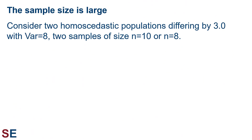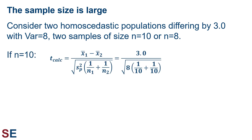Now let's look at the effect of sample size. Consider two populations with means that differ by 3, each with a variance of 8, but we take a sample of either 10 or 8. Since the sample sizes are changing, we'll be using two different t-critical values. With sample sizes of 10, plugging everything in gives a difference of 3 in the numerator, pooled variance of 8, and sample sizes of 10. Calculating this out gives a t-calculated value of 2.372, which is larger than 2.101 — the critical value for 18 degrees of freedom and an alpha value of 0.025 — and we would correctly reject the null hypothesis of equal population means.